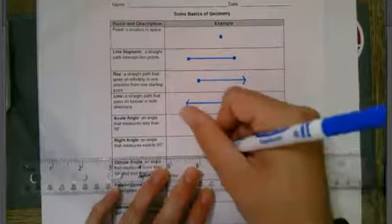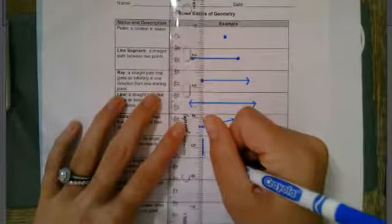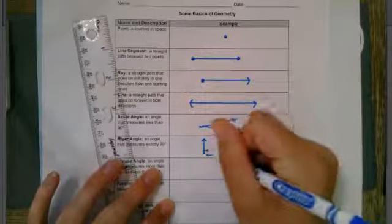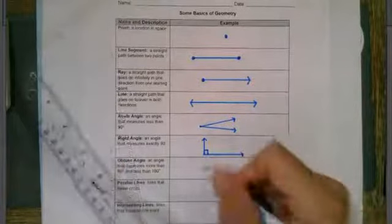Right angle. An angle that measures exactly 90 degrees. And I'm going to try to be as precise as possible by creating my right angle here. Remember we indicate an angle as a right angle by forming a little box in the corner.